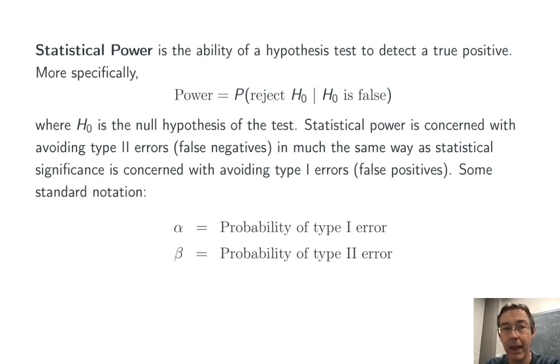So notation: alpha is the probability of a type 1 error. If you're watching this vid, I'm sure you've seen that before. It is the significance level of the test. Beta is the probability of a type 2 error. That's what we're going to be more concerned with in this vid.